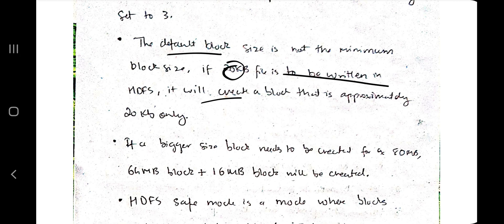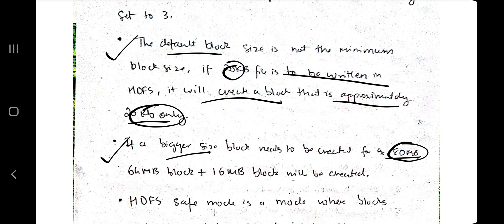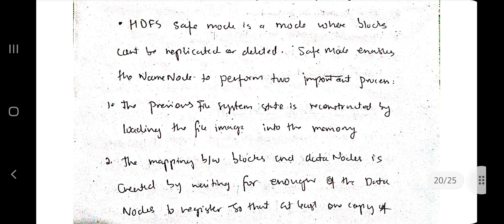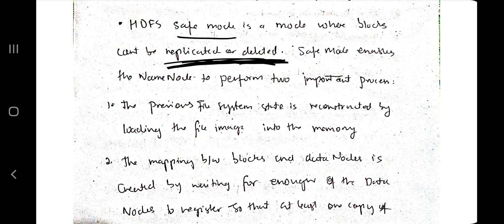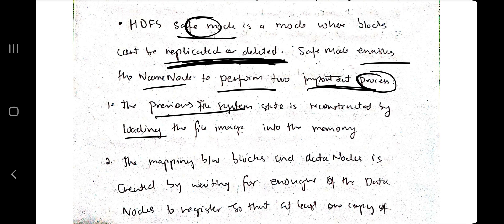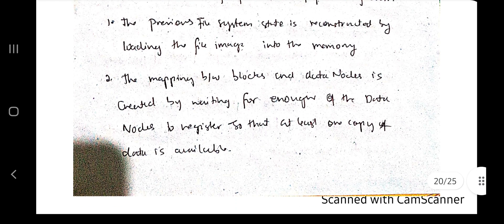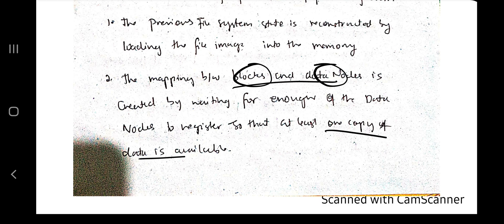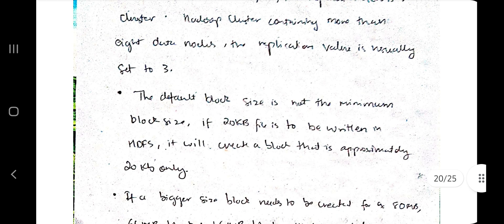It's not compulsory to copy exactly the default block size — if a 20 KB file is to be written, a block of approximately that size is created. For larger files, say 80 MB, the default block size is 64 MB and the remaining portion is created in a separate block. Safe mode is a mode in which no replication or deletion happens. In safe mode, the name node performs two processes: previous file system metadata is loaded into the fs image, and mapping between blocks in the data nodes is done so that at least one copy of the data is available.